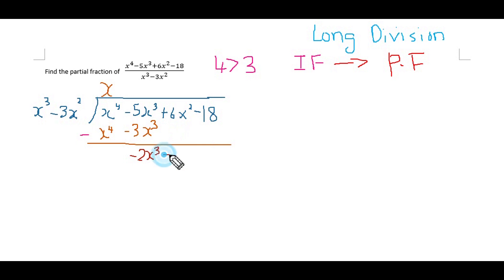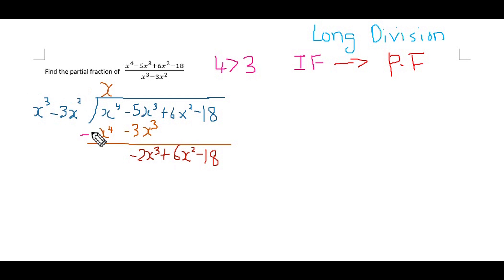We bring down 6x² and -18. Next, we check the degree of these terms and the denominator term — both are degree 3, so this is still considered improper. Therefore, we have to continue until the degree of the remainder becomes lower than the degree of the denominator.